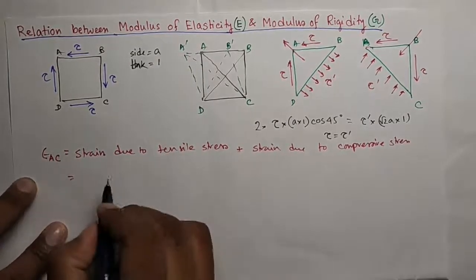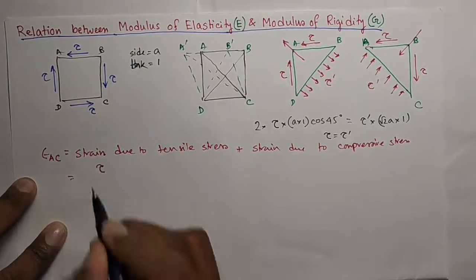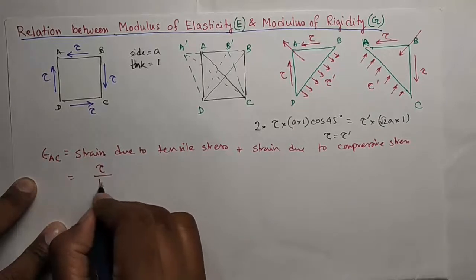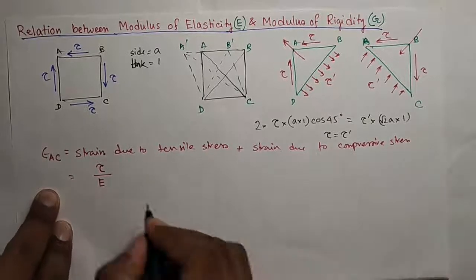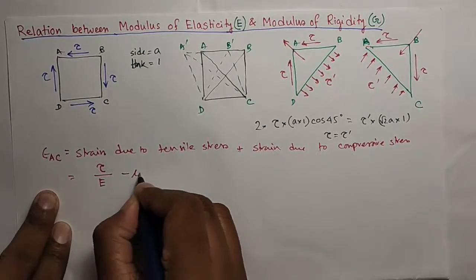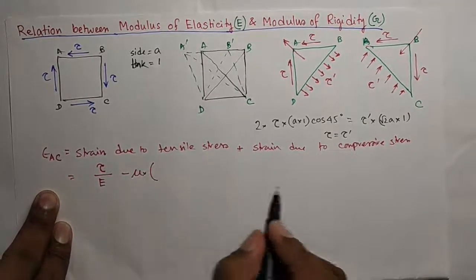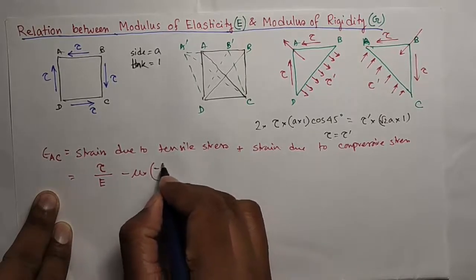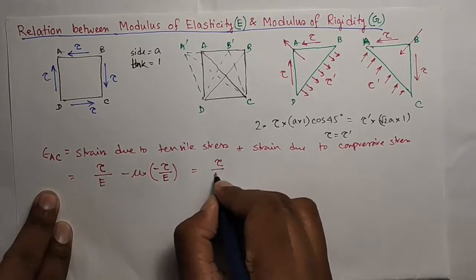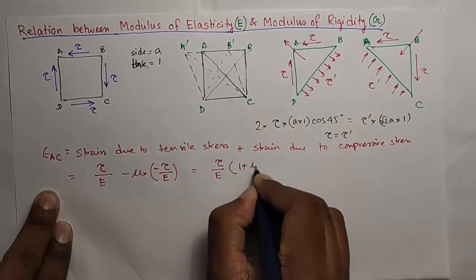The strain due to tensile stress is nothing but the tensile stress by the Young's modulus and the strain due to compressive stress you have to take in the Poisson's effect. It will be minus of Poisson's ratio into the strain. The strain due to the compressive stress is negative. So, minus tau by E, tau by E into 1 plus Mu.